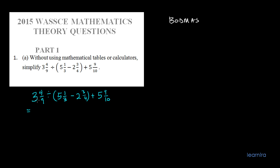9 times 3 gives us 27, and 27 plus 4 gives us 31, so we have 31 over 9. Divided by: 5 times 3 is 15, plus 1 is 16, so 16 over 3. Minus: 4 times 2 is 8, plus 3 gives us 11, so 11 over 4. Plus: 5 times 10 is 50, plus 9 is 59, so 59 over 10.